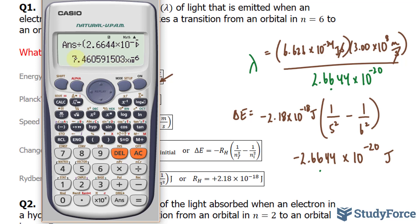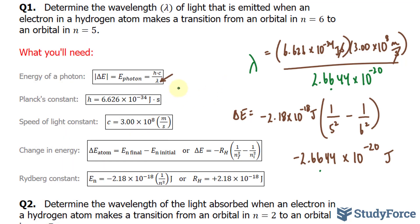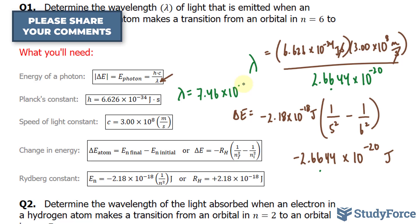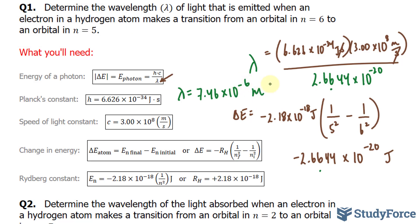To three significant figures, we can write down 7.46 times 10 to the power of negative 6. So lambda is 7.46 times 10 to the power of negative 6 meters. Of course, you can write this in nanometers if you like, but it's strictly up to you. The question doesn't ask for it.